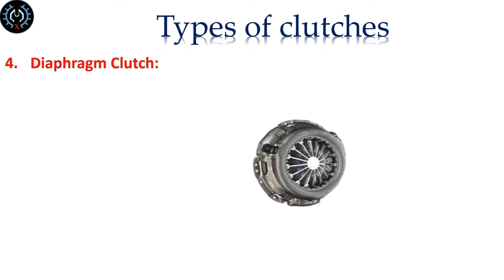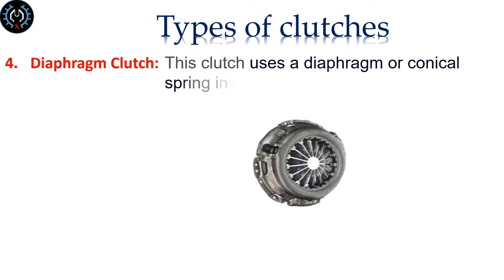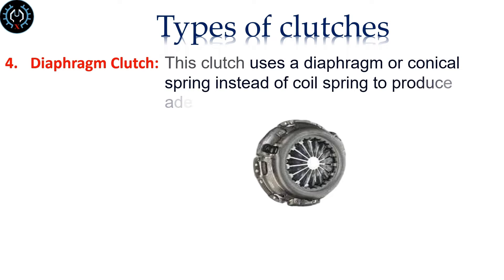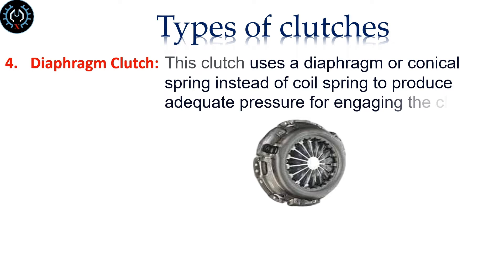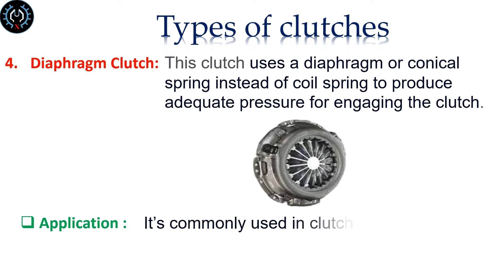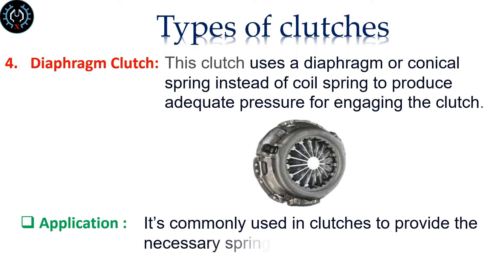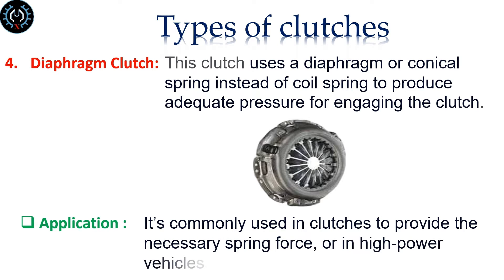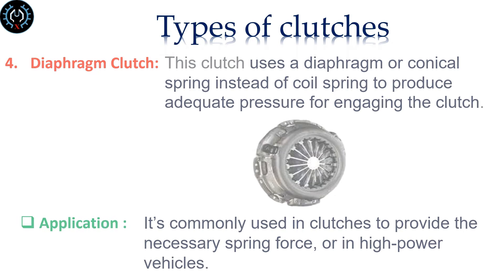Diaphragm clutch. This clutch uses a diaphragm or conical spring instead of a coil spring to produce adequate pressure for engaging the clutch. It is commonly used in clutches to provide the necessary spring force, or in high power vehicles.